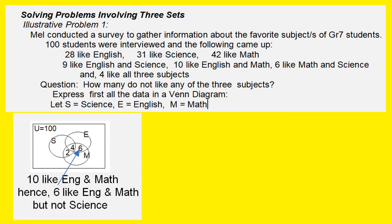We can now consider English and Math. Ten like English and Math. Since we already have a 4 earlier, we only need to add 6 more students. So therefore, 4 plus 6 is equal to 10 who like English and Math. After answering Math and Science and English and Math, we are now down to English and Science, which is 9. For English and Science, we already have a 4. So, all we need to add is 5, which makes a total of 9.